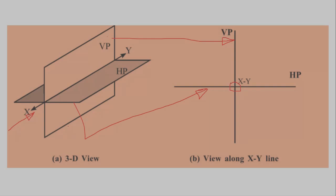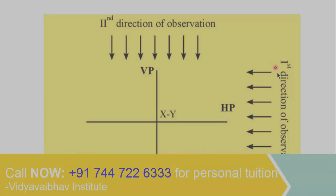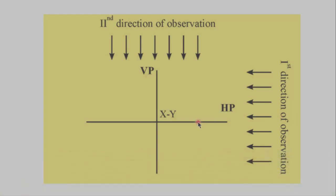HP and VP will be our reference planes while XY line will be our reference line. Now we will fix two directions of observations. This is direction one and this is direction two. That means we are fixing the positions of the observer which will look towards this system. Whenever we look towards this system, we will look from one of these directions of observations.